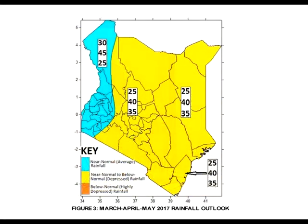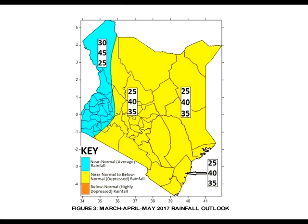In summary, the outlook for March-April-May 2017: depressed rainfall is expected over most parts of the country, especially the eastern sector, during the March to May 2017 long rain season. However, rainfall over some few parts of Western Kenya is likely to be near normal.